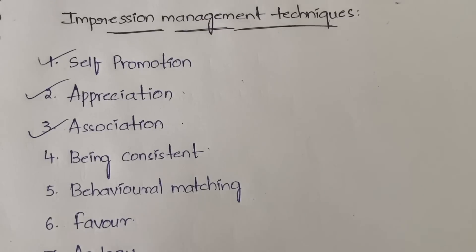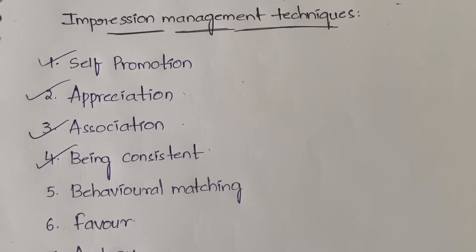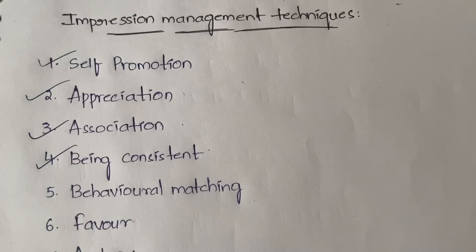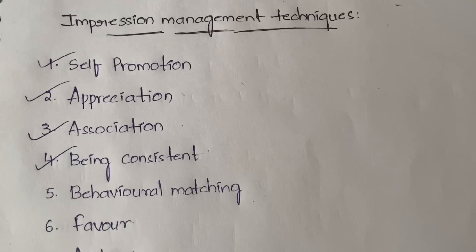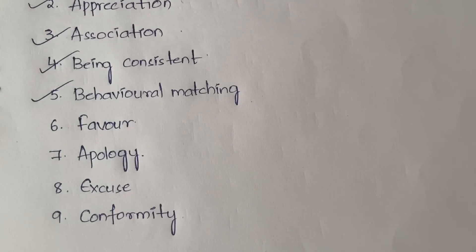Next is behavioral matching. For example, if the professor you need marks from is very disciplined and punctual — does everything on time — you will try to match your behavior to theirs. The professor will then think you are also punctual and get a good impression of you. You are matching your behavior to the observer's behavior.